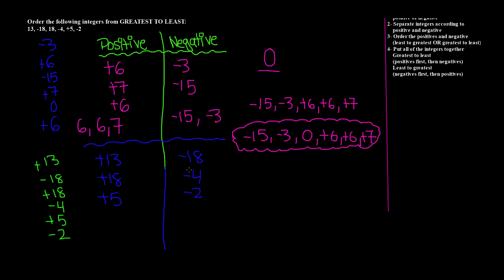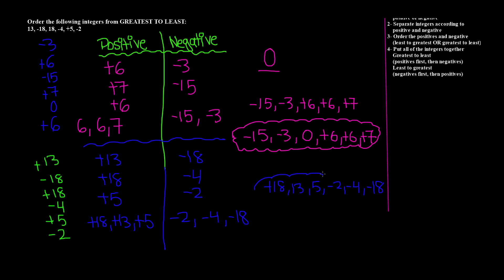For greatest to least, our positives go: 18 is the greatest, then 13, then 5. For negatives, remember: the smaller the number, the greater the value — so flipped, the greater the number, the smaller the value. For greatest to least, negative 2 is actually the greatest, so we write negative 2, negative 4, negative 18. Step 4: for greatest to least, positives come first, then negatives. So: 18, 13, 5, negative 2, negative 4, negative 18. We don't need to worry about 0 since it wasn't in our list. That's our greatest to least order.